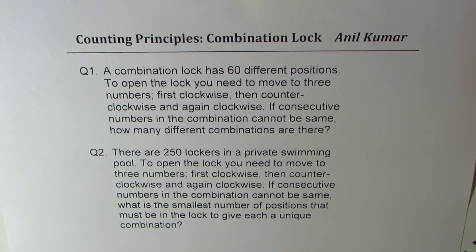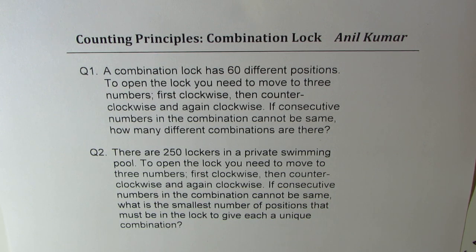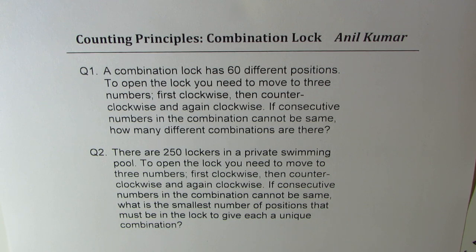Question number two: There are 250 lockers in a private swimming pool. To open the lock you need to move to three numbers — first clockwise, then counterclockwise, and again clockwise. If consecutive numbers in the combination cannot be the same, what is the smallest number of positions that must be in the lock to give each locker a unique combination?